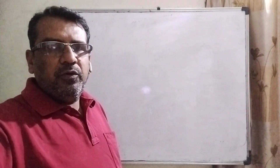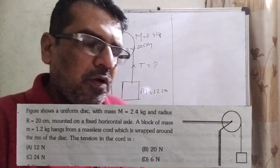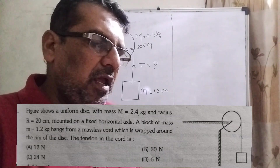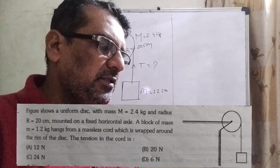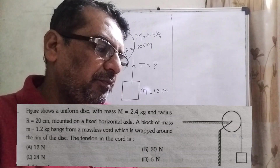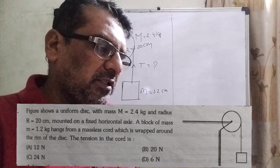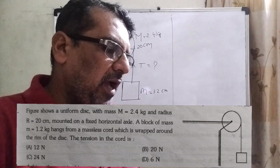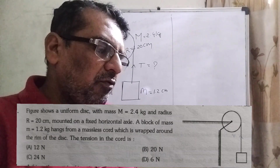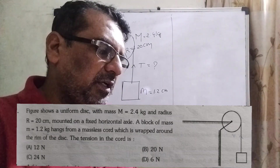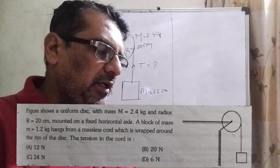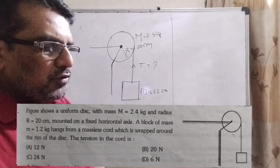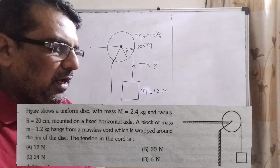Now, the question says: a figure shows a uniform disc with mass M equal to 2.4 kilogram and radius R equal to 20 centimeter, mounted on a fixed horizontal axle. A block of mass m equal to 1.2 kilogram hangs from a massless cord which is wrapped around the rim of the disc. The tension in the cord is — options: A) 12 Newton, B) 20 Newton, C) 24 Newton, D) 6 Newton.